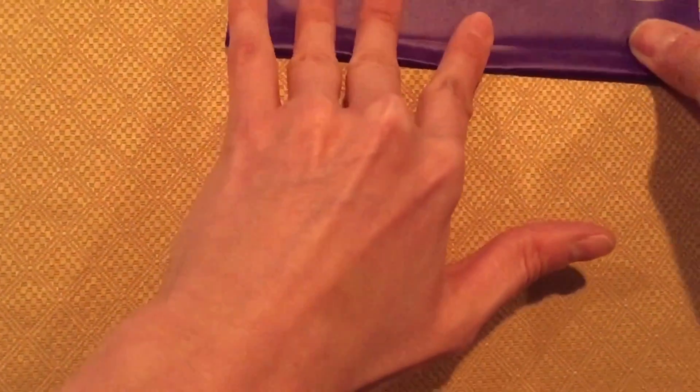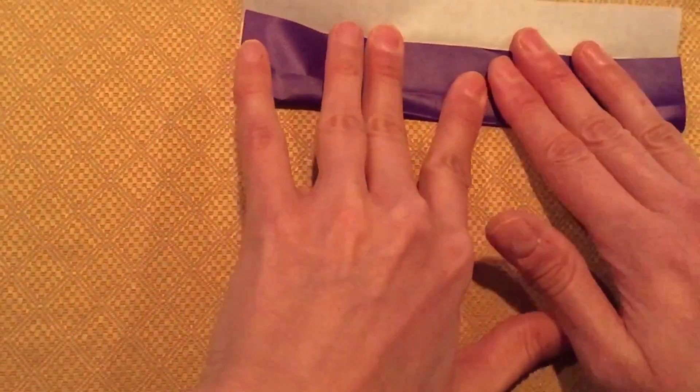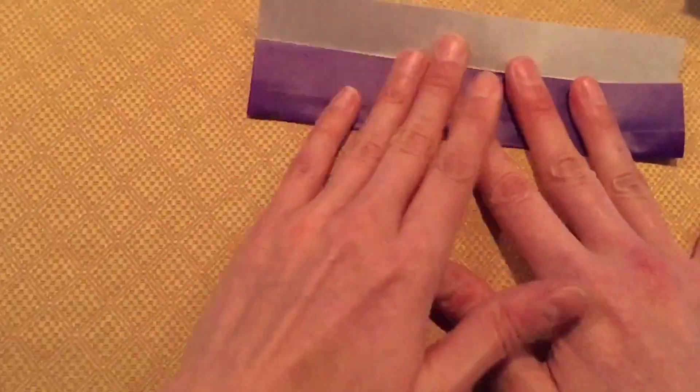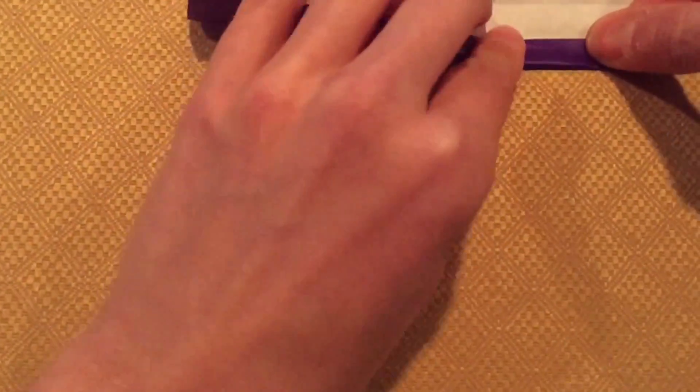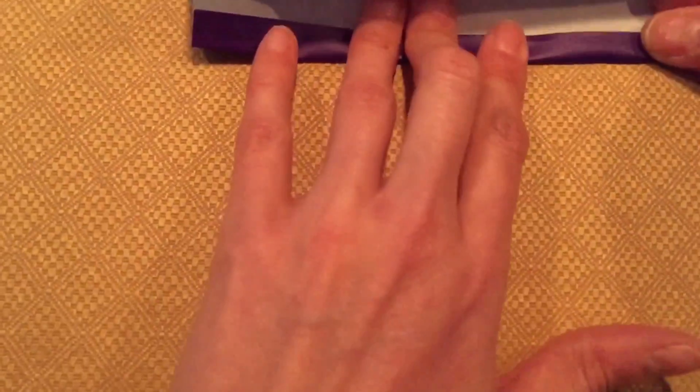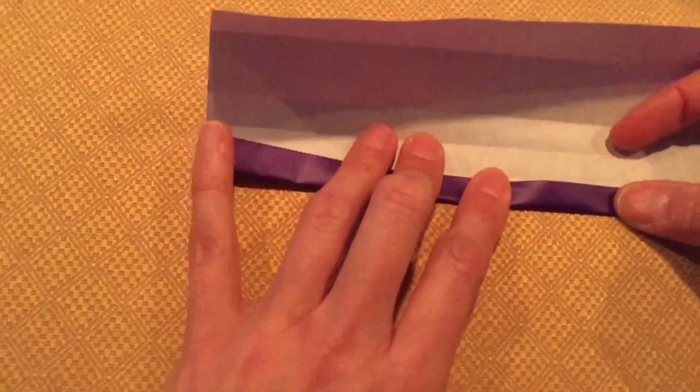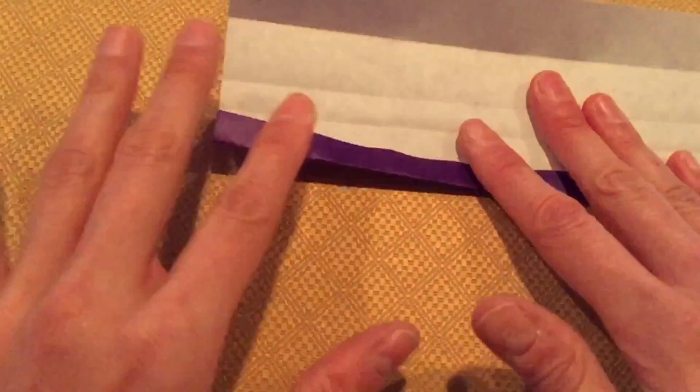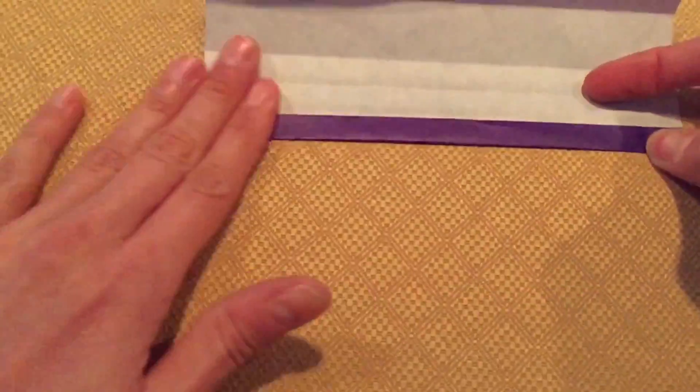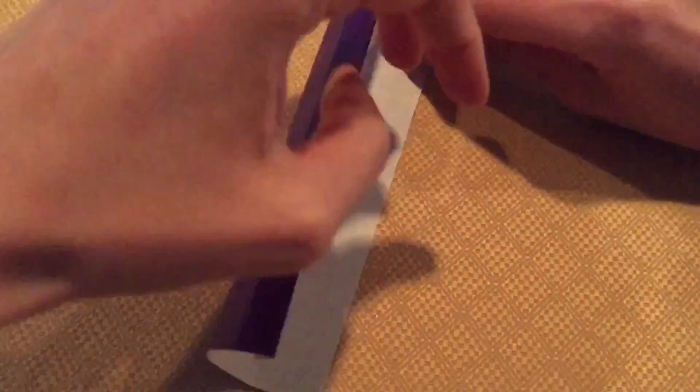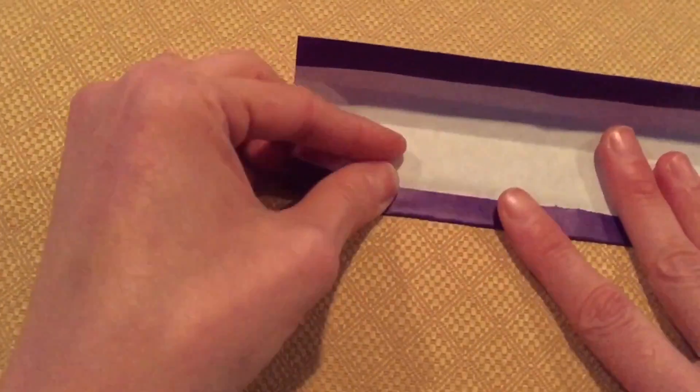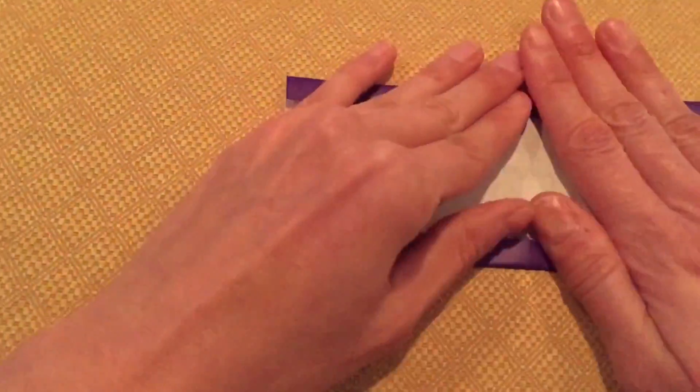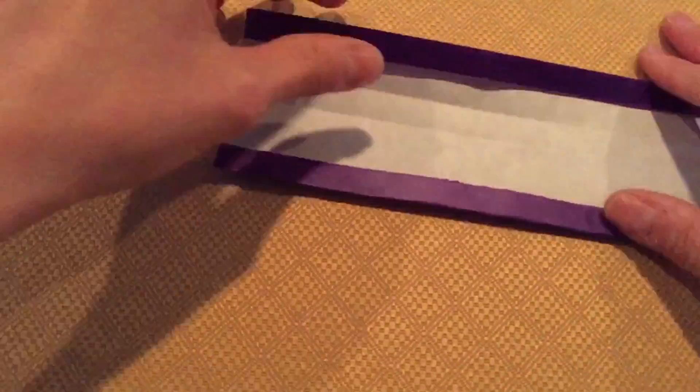There we go. And then we fold another one. So this is how you're hiding the edges. So now the thing to do, one more accordion here.